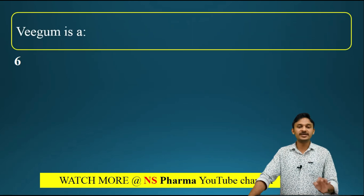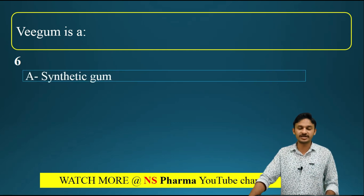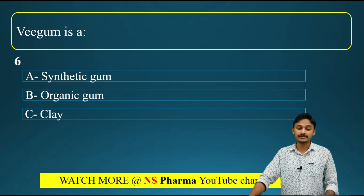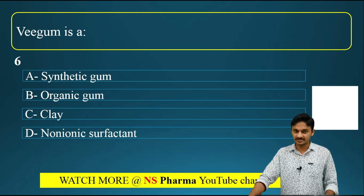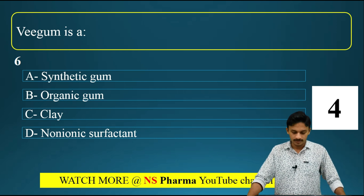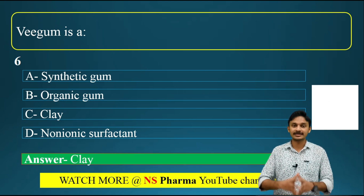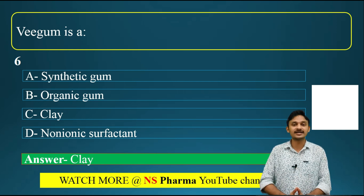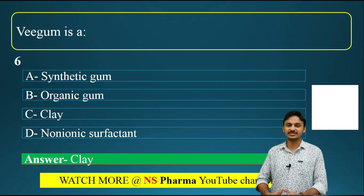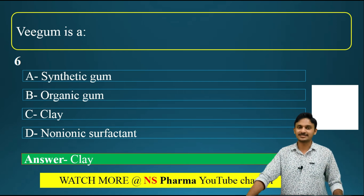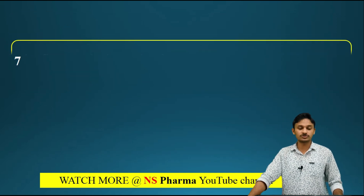Question number six: Veegum is a what? Options are: option A - synthetic gum, option B - organic gum, option C - clay, option D - non-ionic surfactant. The correct answer is option C - clay. Veegum is a clay used as a stabilizer in emulsions and suspensions.